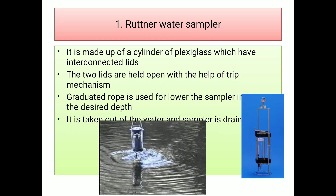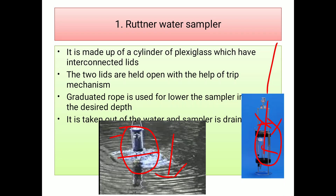The first one is the Ruttner water sampler. It is made up of a cylinder of plexiglass which has interconnected lids. The two lids are held open with the help of a trip mechanism. With the help of this trip mechanism, we can open and close both ends simultaneously. It is also attached with a graduated rope. This sampler is dipped to the desired depth. Once it reaches the desired depth, with the help of the trip mechanism, you can open these two ends simultaneously to collect water from the deeper area.